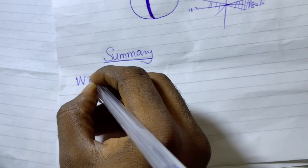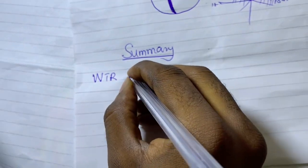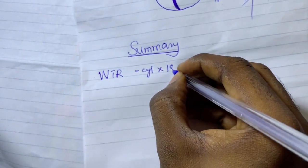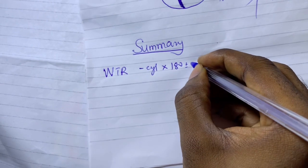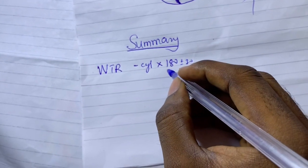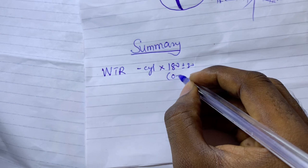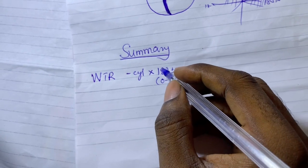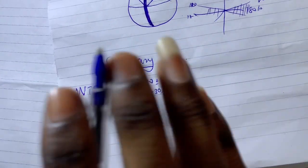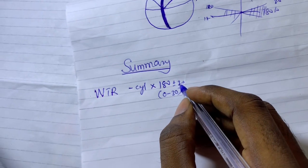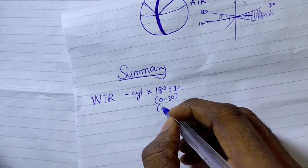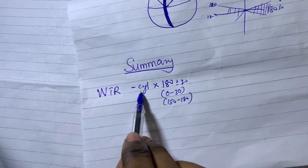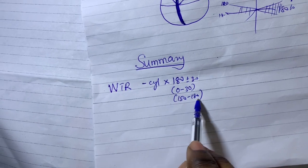If it is with-the-rule astigmatism and the prescription is in minus cylinder form, the axis should be 180 plus or minus 30. That means the axis should lie between 0 and 30, or between 150 and 180 — since we don't go beyond 180, and 180 is equivalent to zero on the protractor.